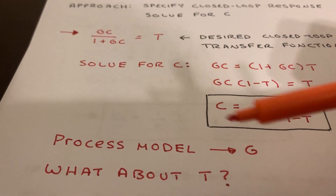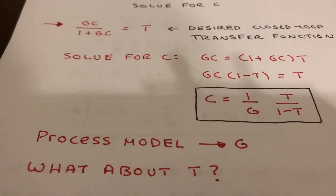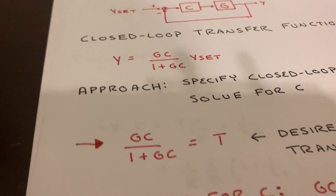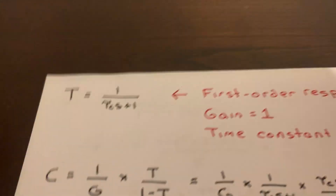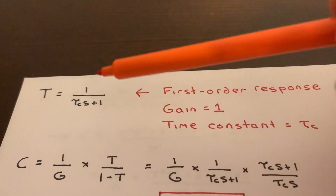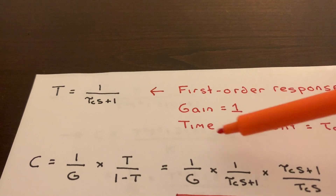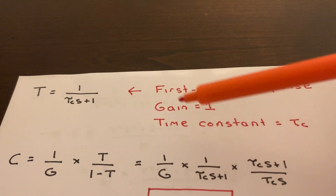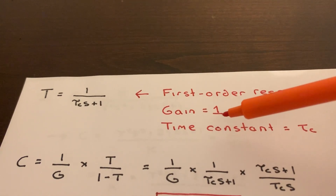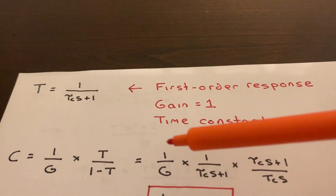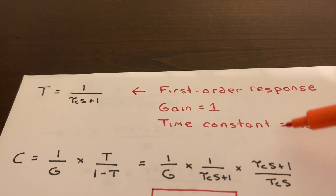The two things we need to know are G, which comes from a process model, and T. A common version of T is to set it equal to a first order system. To ensure zero steady state offset — that is, that we track our set point — we set the gain equal to one. That means if we make a change in our set point, our output will match that change. Then we specify how fast that response is, and that's our closed loop time constant τ_C. That's really the tuning parameter here.